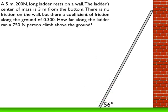We've got a 5-meter, 200-Newton ladder that rests on a wall. The ladder's center of mass, or center of gravity, is 3 meters from the bottom along the ladder. There's no friction on the wall, but there is a coefficient of friction along the ground of 0.3. How far along the ladder can a 750-Newton person climb above the ground?